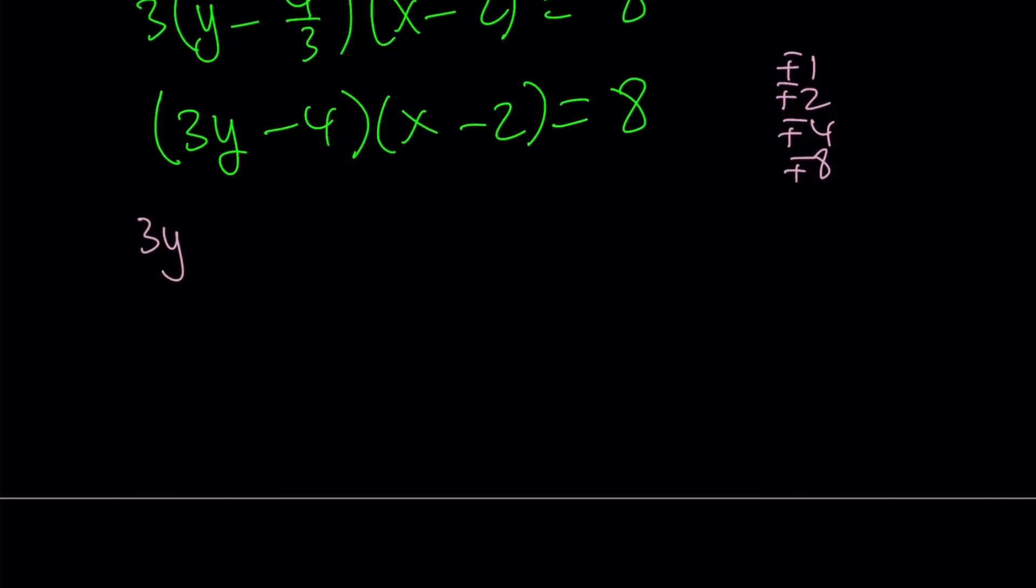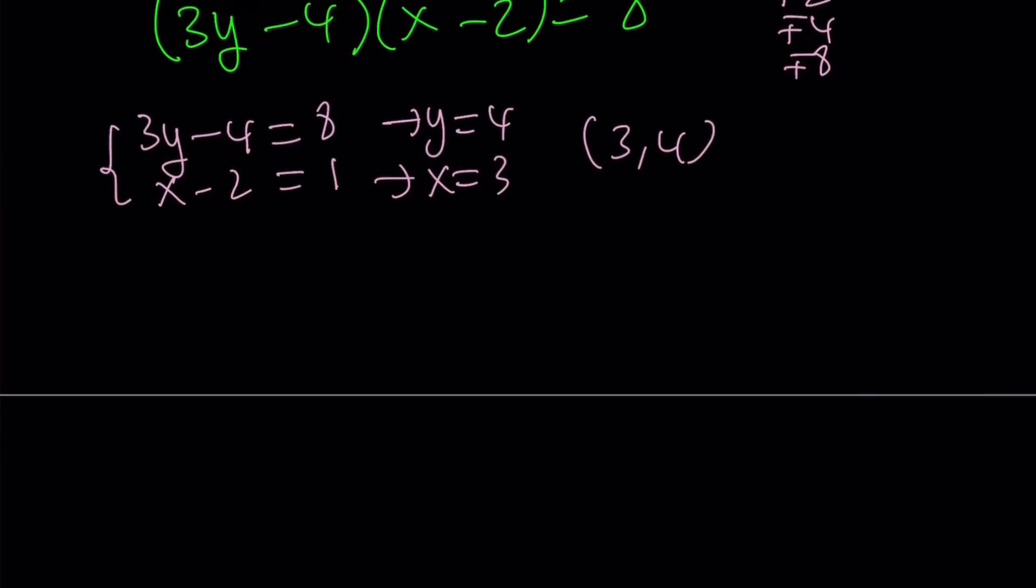For example, we have 3y minus 4 can be 8 and x minus 2 can be 1, so that their product is 8. This gives us y equals 4 and x equals 3. So 3 comma 4 is a valid solution. And we're just going to proceed like this.